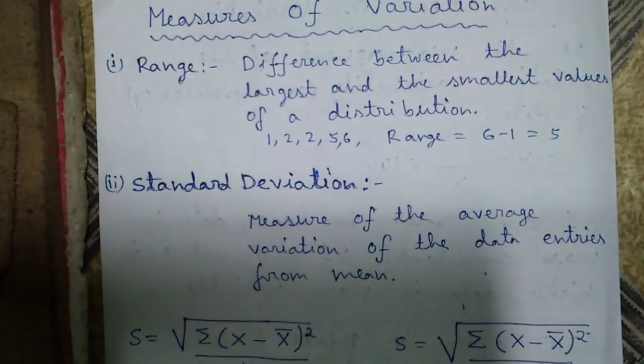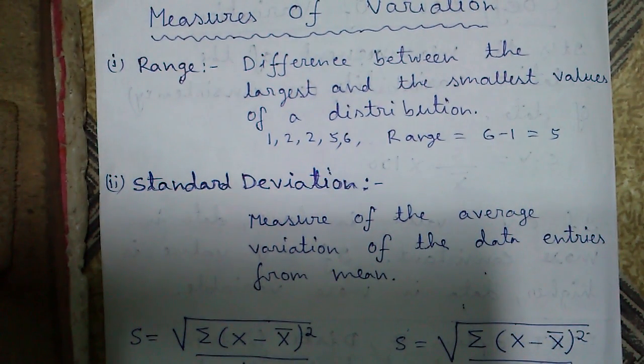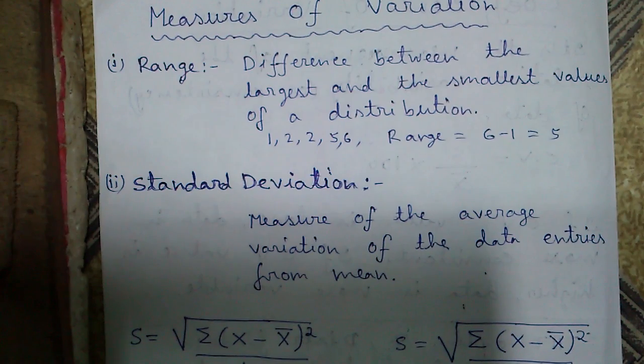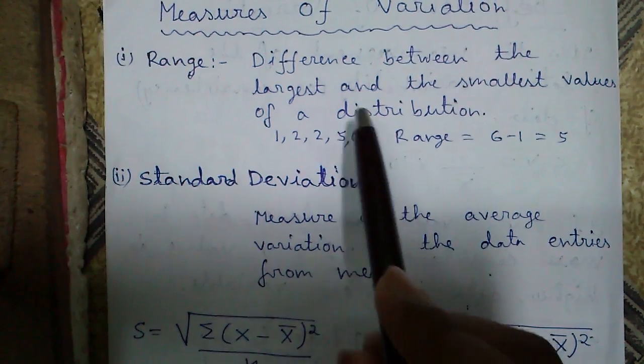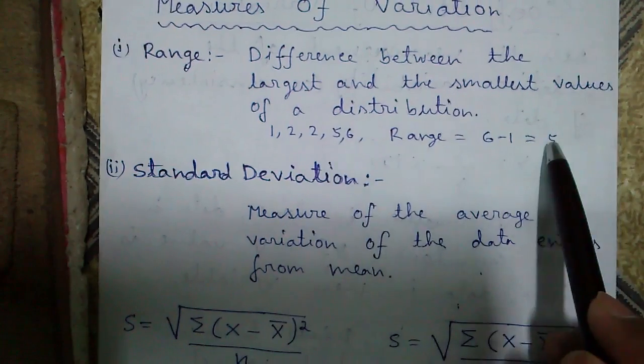In measures of variation, there comes range, standard deviation and variance. So what is range? Range is the difference between the largest and the smallest value of the distribution. In our example, it is 6 minus 1, which is 5.